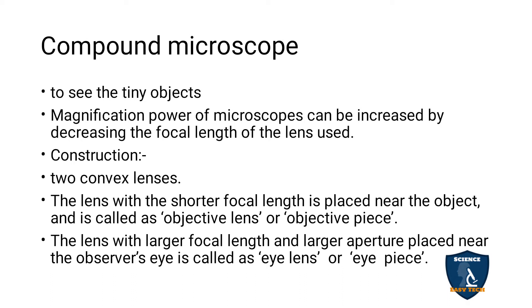The magnification power of the microscope can be increased by decreasing the focal length of the lens used. So if you want to increase the magnification power, the lens focal length will be decreased.